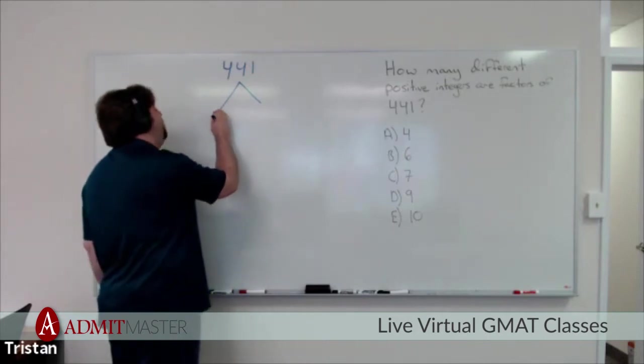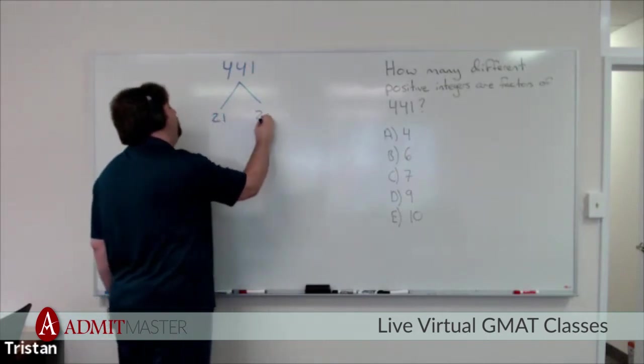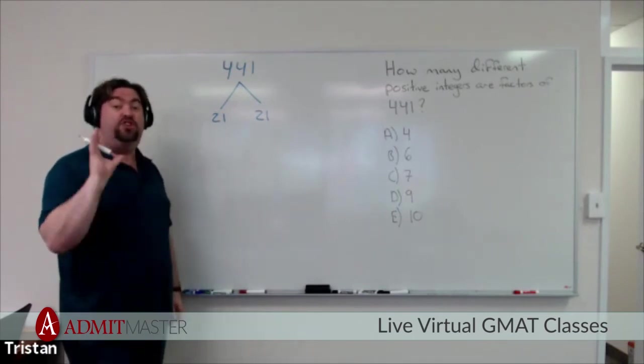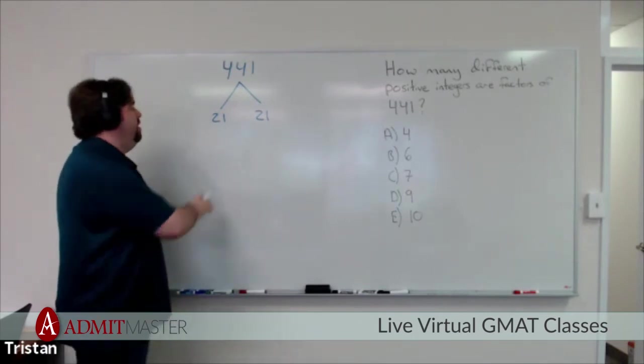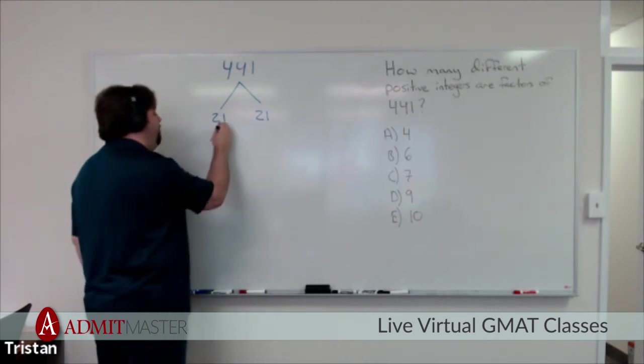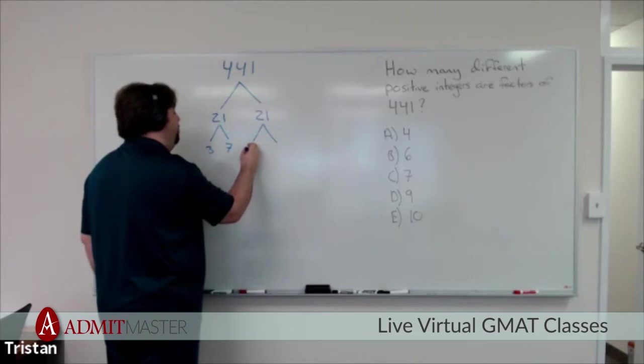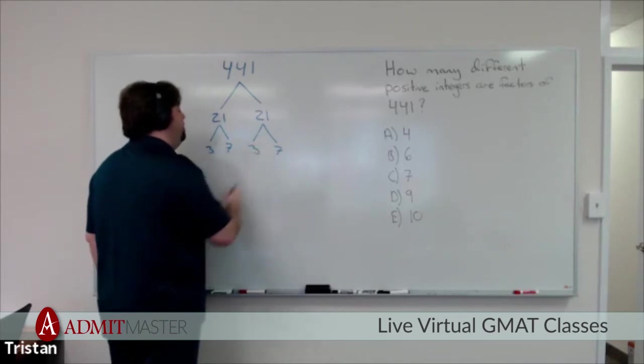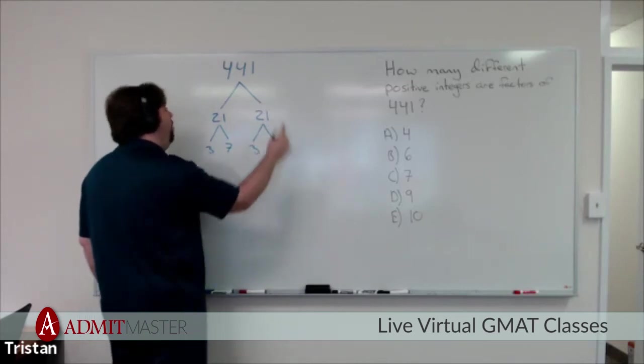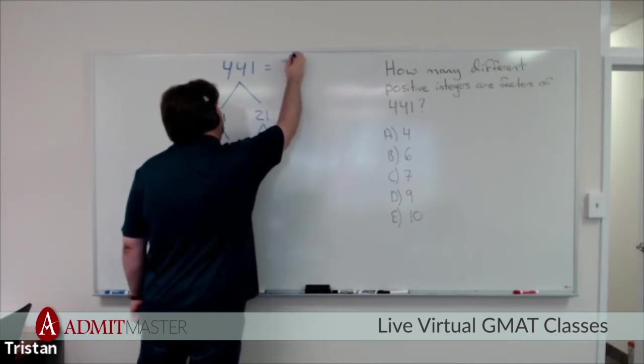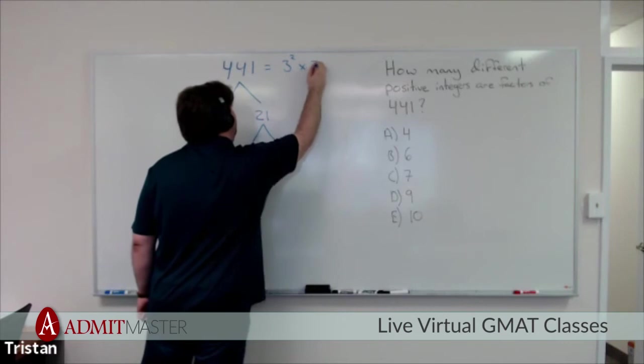So I can break down 441 into 21 times 21. It's a great idea to learn your perfect squares. You can break 21 down further into 3 times 7. And of course, you do that for the other one, 3 times 7. Multiply all these together and you get our prime factorization of 3 squared times 7 squared.